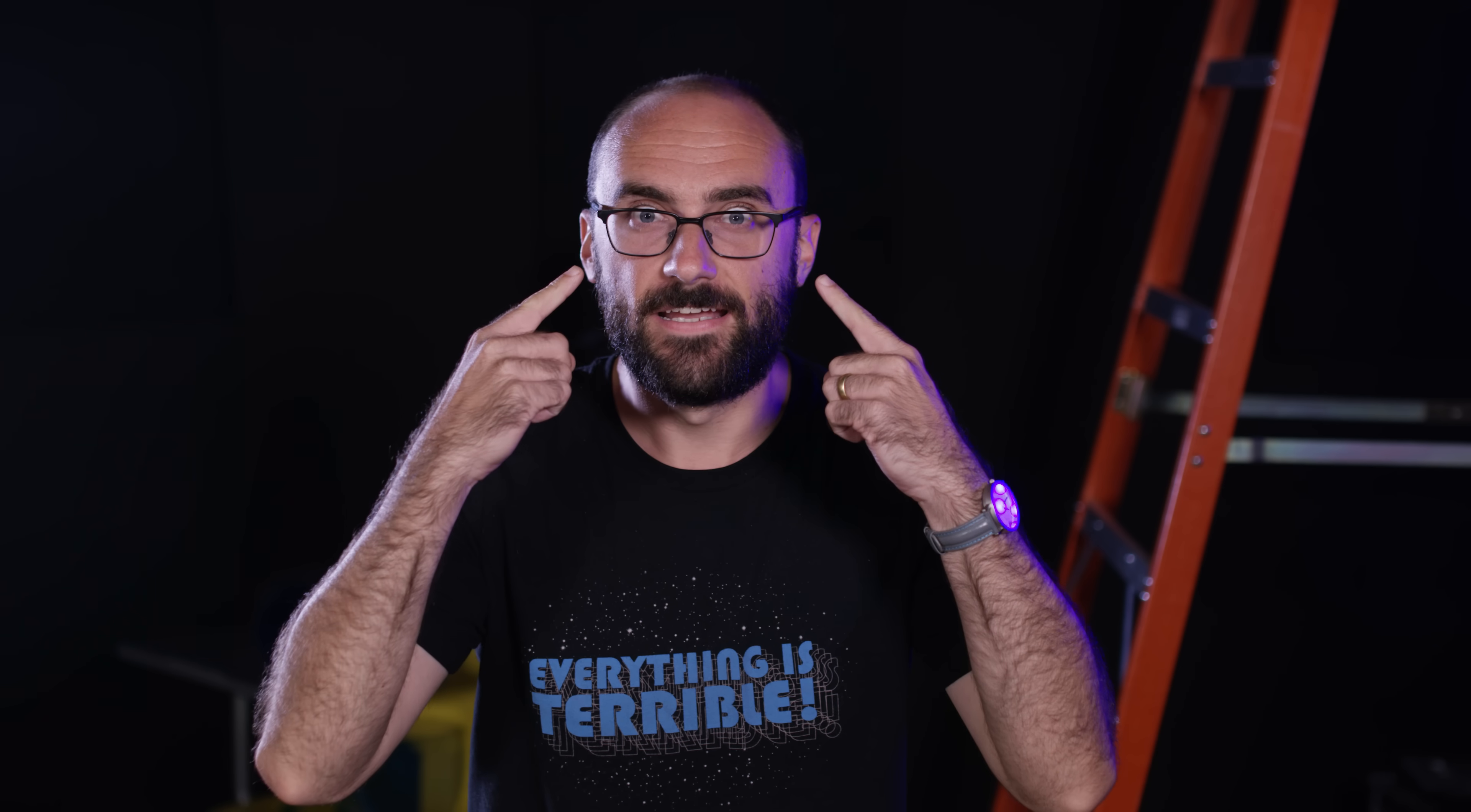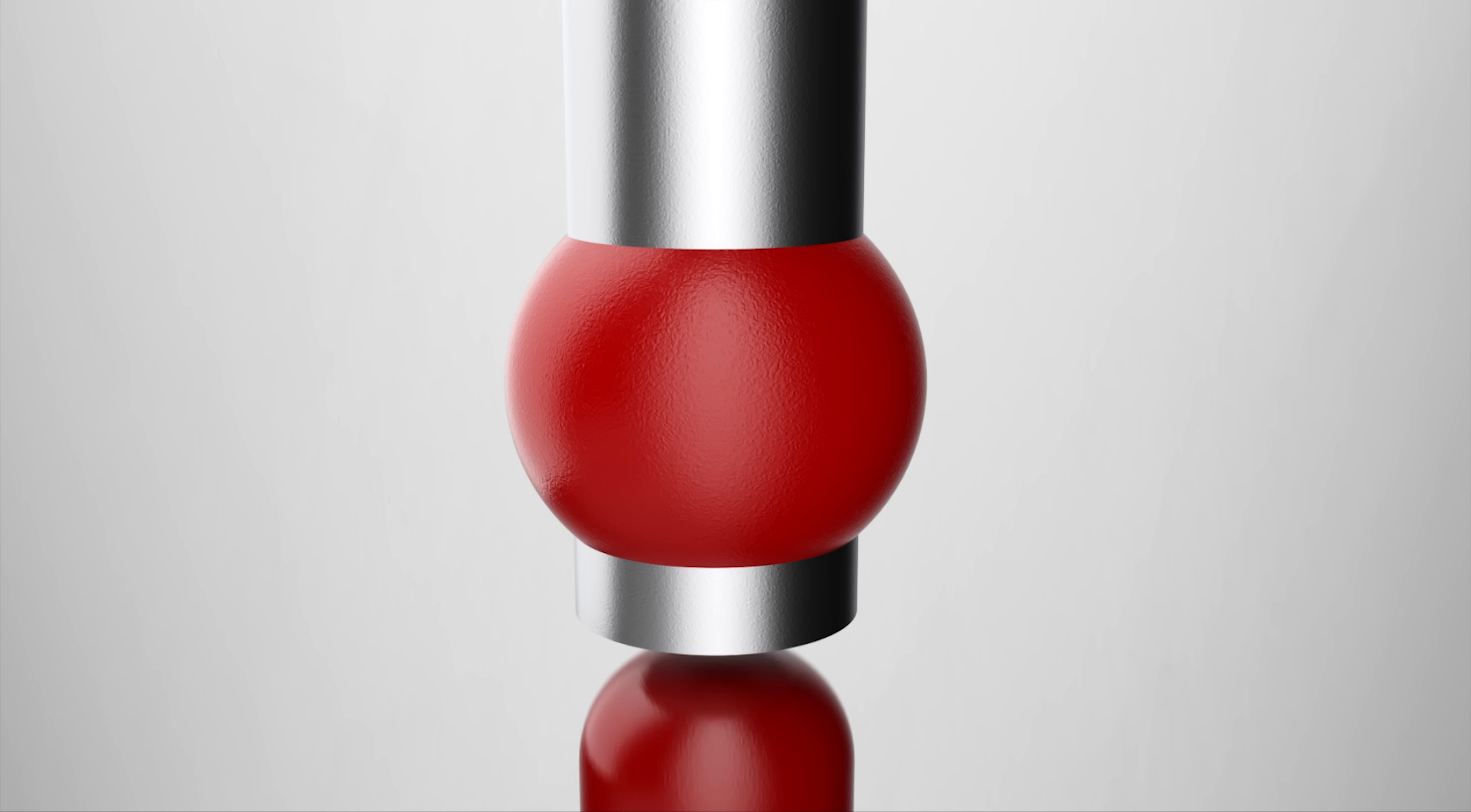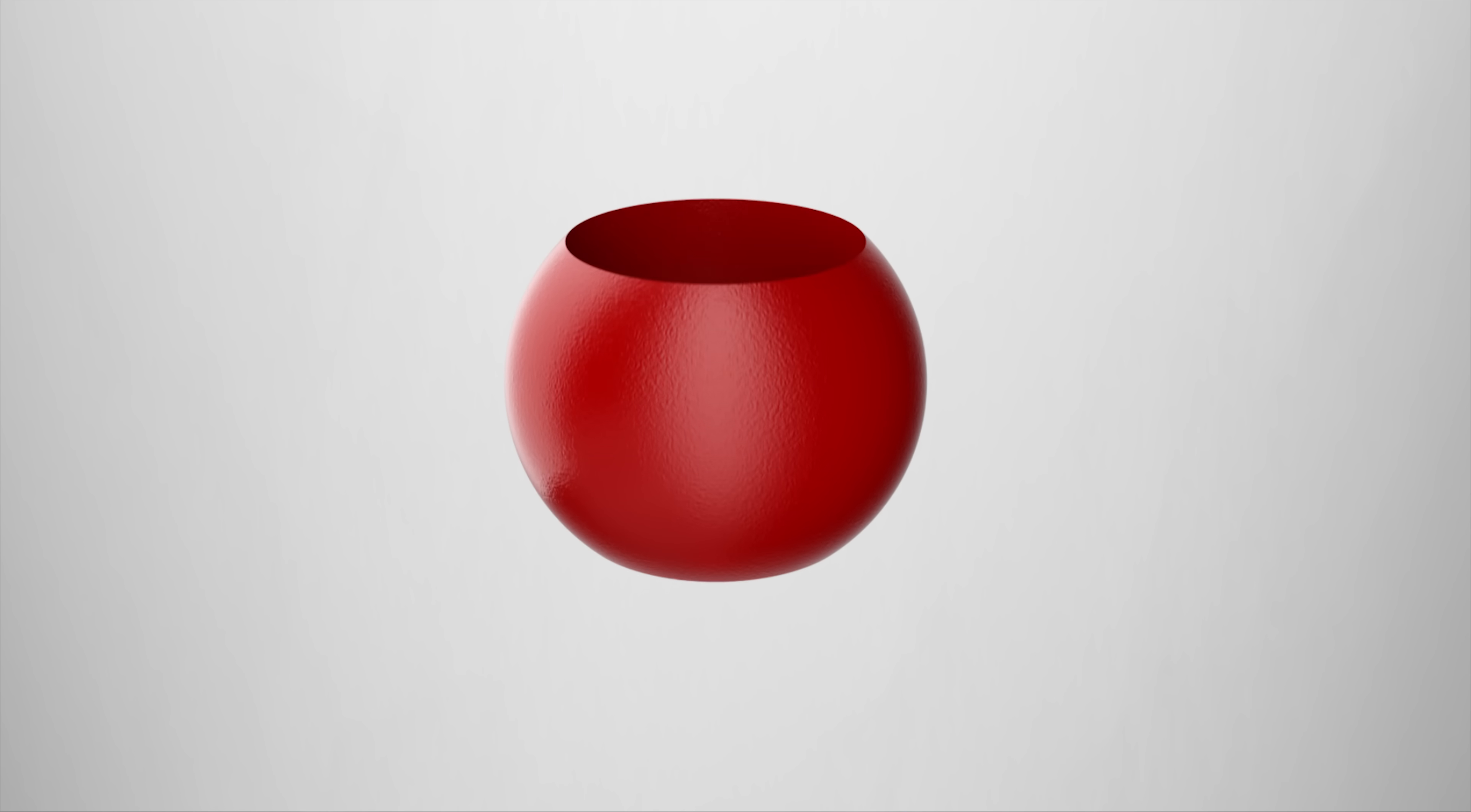Hey Vsauce, Michael here. If you core a sphere, that is remove a cylinder from it, you'll be left with a shape called a napkin ring because, well, it looks like a napkin ring.